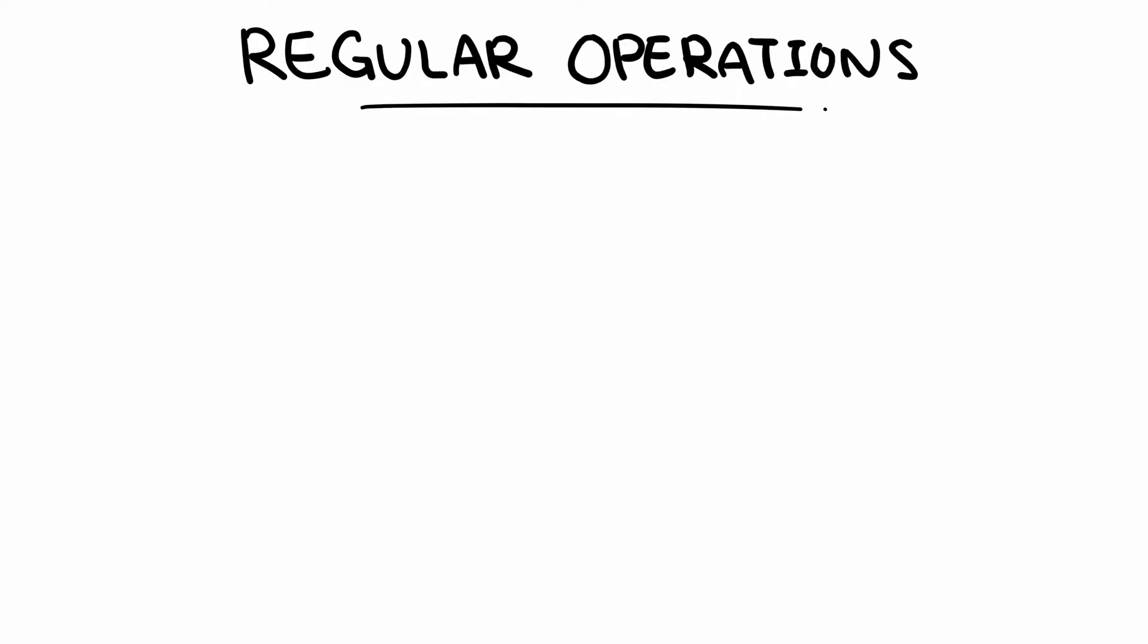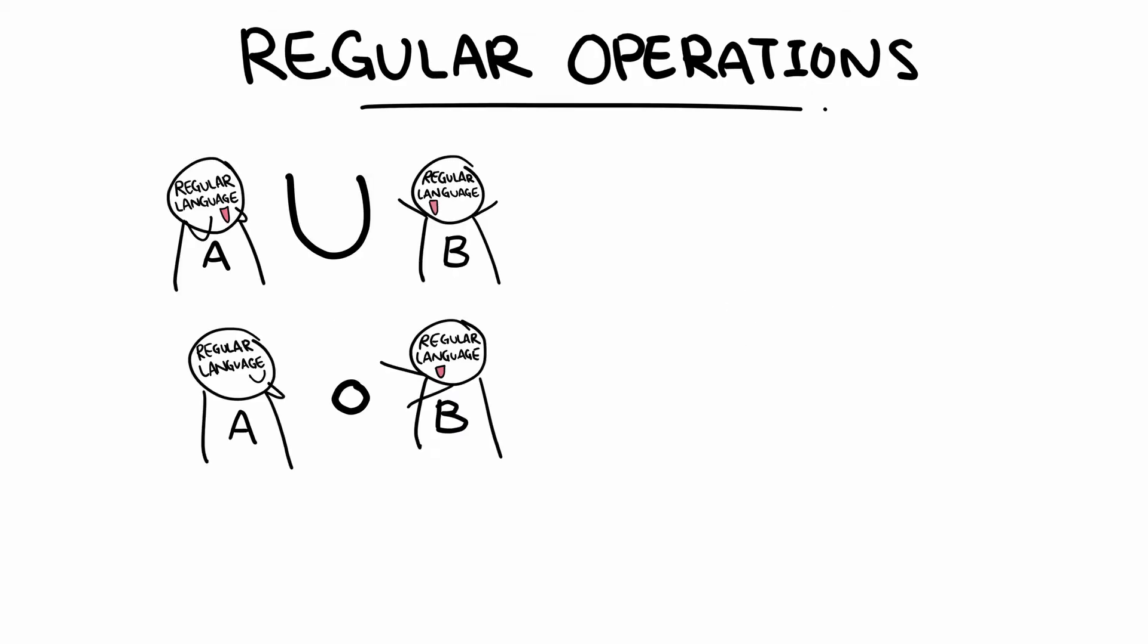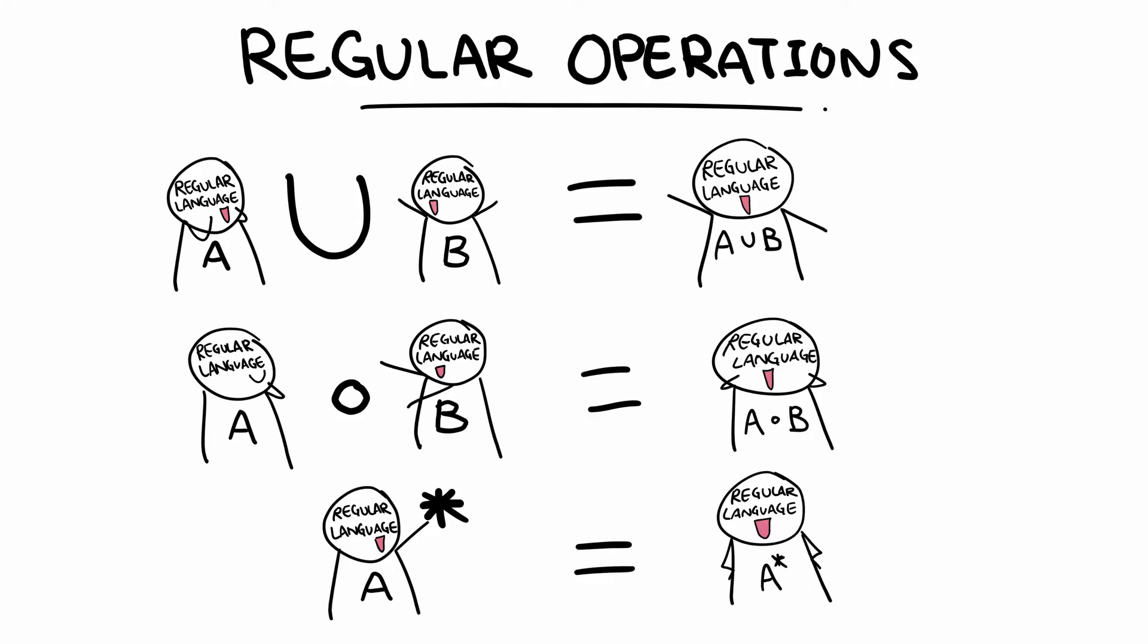Well, the term regular operations is just another way of classifying the operations union, concatenation, and star, as all of them contain a certain property, which is that when operated on any regular language, the resulting language will still be a regular language.